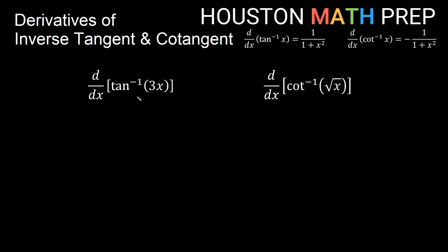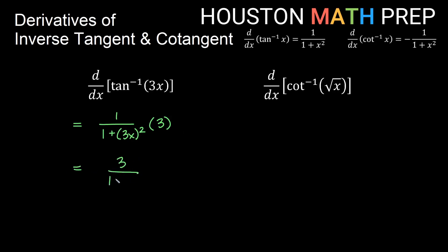We replace x with 3x and apply the chain rule. The derivative of inverse tangent of 3x is 1 over 1 plus the quantity 3x squared, then the chain rule gives us times 3 for the derivative of the inside. Simplifying, we get 3 on top and 1 plus 9x squared on the bottom.